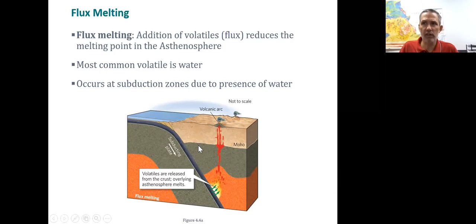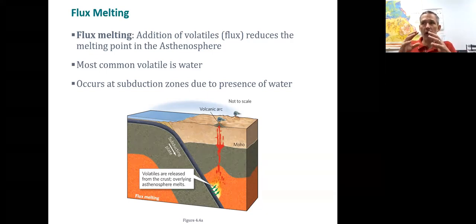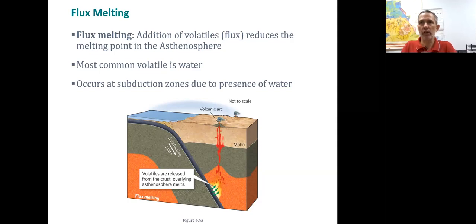As this magma rises and encounters other rocks, some minerals are going to have a lower melting point and some of those will melt. One mineral that has the lowest melting point of just about any common rock is quartz, which has a melting point of about 550 degrees Celsius at atmospheric conditions. So the sample is going to become more felsic, or more rich in silica.